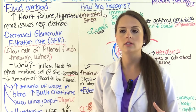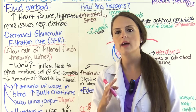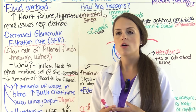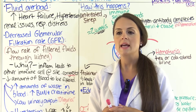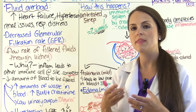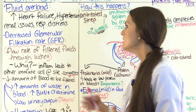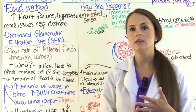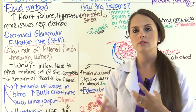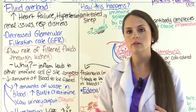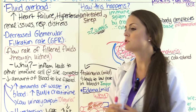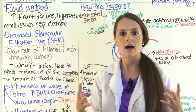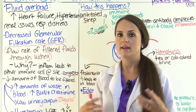Fluid overload affects the heart — too much fluid increases blood pressure and wears the heart out. The heart muscle becomes weak, leading to heart failure and hypertension. They can also have renal issues because the kidneys aren't able to filter as much. Additionally, when the heart becomes weak and fluid backs up into the lungs, they get congestion and can't breathe, leading to respiratory distress.